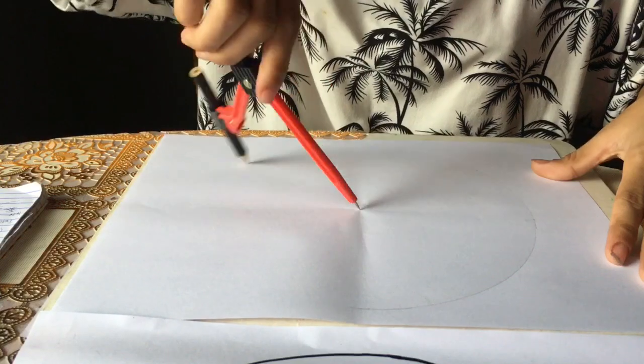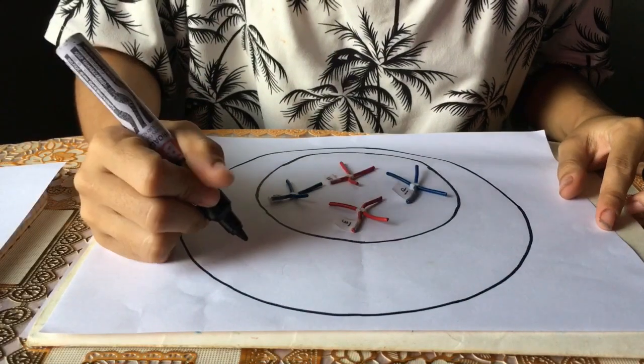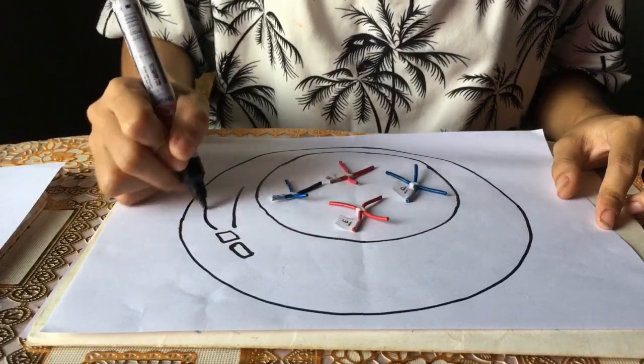Mitosis. Prophase: In this stage, the chromatin begins to condense and the centrioles begin moving to the opposite ends of the cell, and the fibers extend from the centrioles.